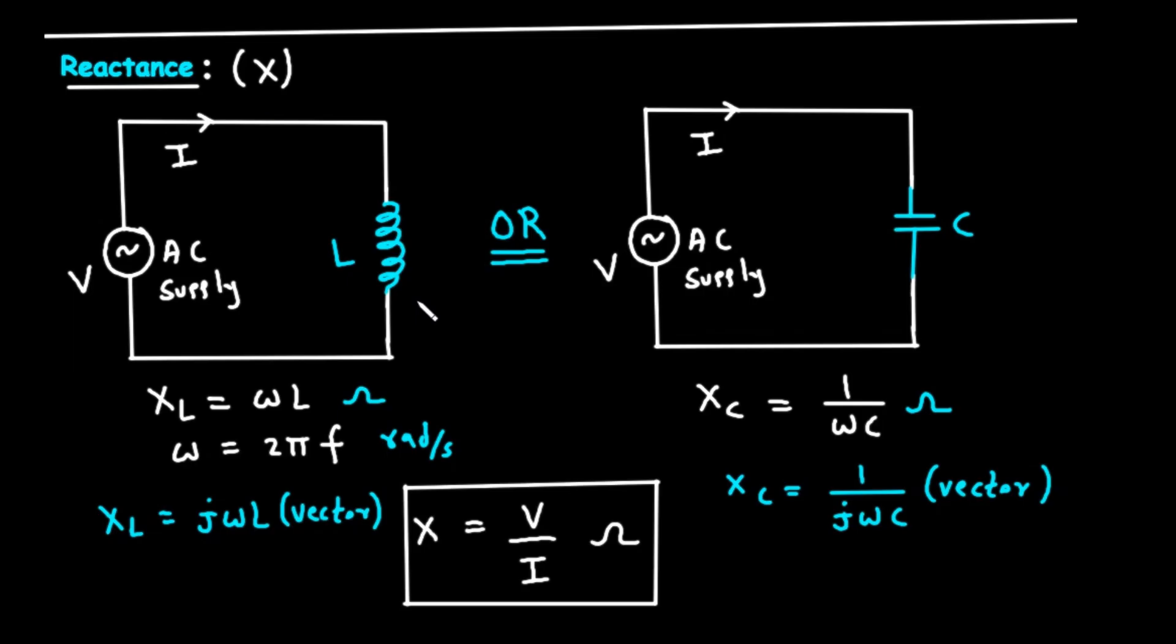Unlike resistance, which dissipates energy as heat, reactance stores energy in a magnetic or electric field and then releases it back into the circuit. A crucial point is that reactance depends on the frequency of the AC current. Let's look at the first type of reactance, shown on the left, inductive reactance.